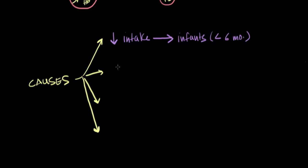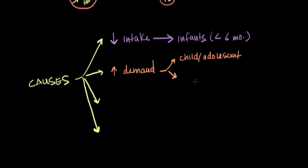Another cause of iron deficiency is an increase in the body's demand for iron. You'll really see this in one of two types of patients: the first is either a child or an adolescent. During childhood and adolescence we undergo a really rapid rate of growth, and along with that rapid rate of growth, we experience a rapid expansion in our blood volume.